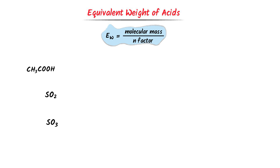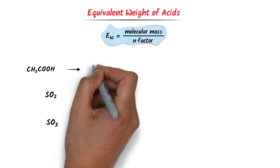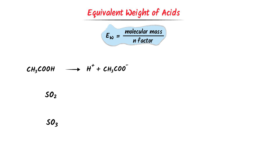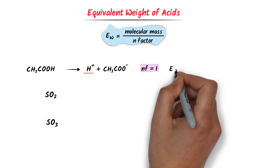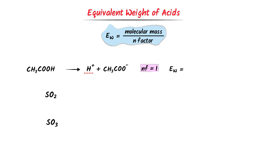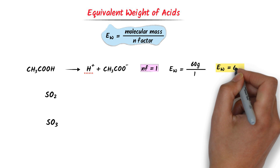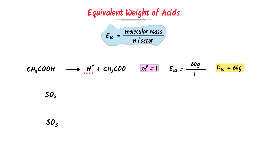In case of acetic acid, it dissociates to hydrogen ion plus acetate ion. There is only 1 hydrogen ion, so its N factor is 1. Its equivalent weight is equal to the molecular weight of acetic acid, which is 60 gram, upon its N factor which is 1. After calculation, I get 60 gram. So the equivalent weight of acetic acid is 60 gram.